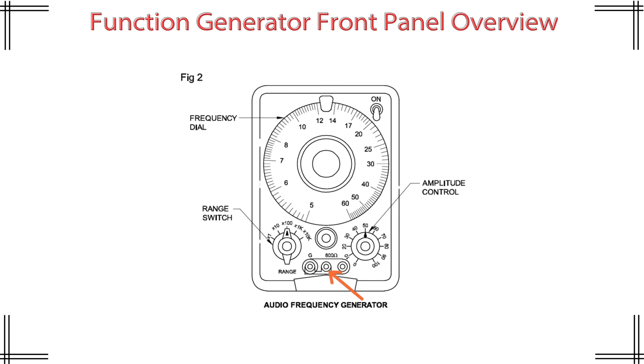Number five. Output terminals. Bottom center. Label: 600 ohms. Impedance matched. Terminals: G ground terminal, output signal terminals. Connects signal to CRO, amplifier or circuit. Use: Plug probes or BNC cables here for output signal testing.